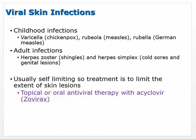Childhood viral infections include varicella (chicken pox), rubeola (measles), and rubella (German measles) — these mainly affect children. Adult infections include herpes zoster (shingles), herpes simplex (cold sores), and genital lesions. You can't treat viral infections with antibiotics, but there are antiviral therapies available. These are usually self-limiting, so treatment is to limit the extent of them — you can't really get rid of them but can reduce duration and spread. Topical or oral antiviral therapy with acyclovir (Zovirax) is used.